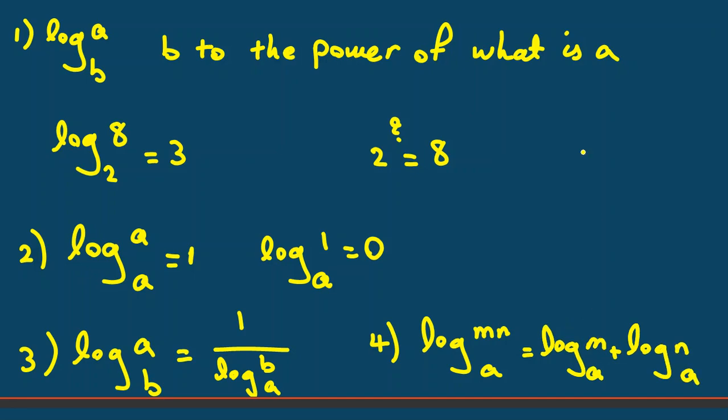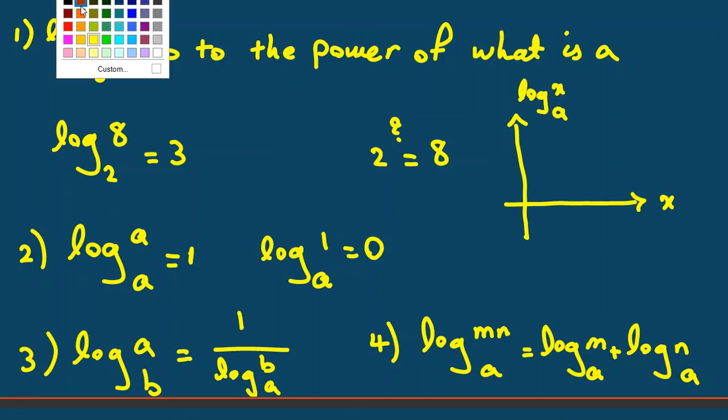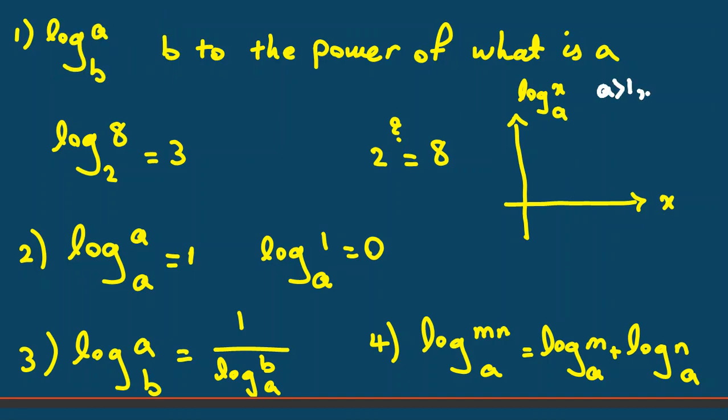So we have these rules and if you want to draw the diagram, it will be something like this. For example, it is X, log base A of X, and A is constant, A is greater than 1, and A is not 1.